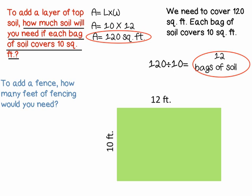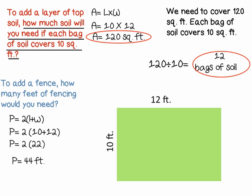Now, to figure out how much fence we would need — a fence goes around the outside, so we're going to use the formula for perimeter. We'll use 2 times length plus width. In this case, 2 times 10 plus 12. 10 plus 12 is 22, so now we multiply 2 times 22 to get 44 feet. We'll need 44 feet of fence to go around the outside of our garden.